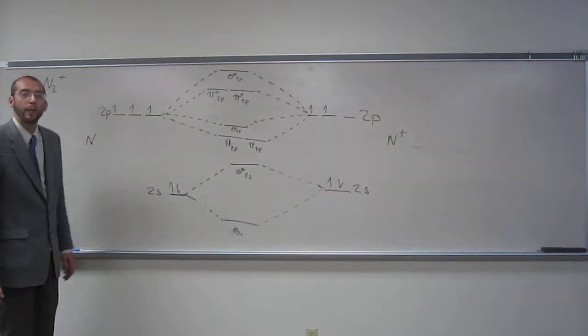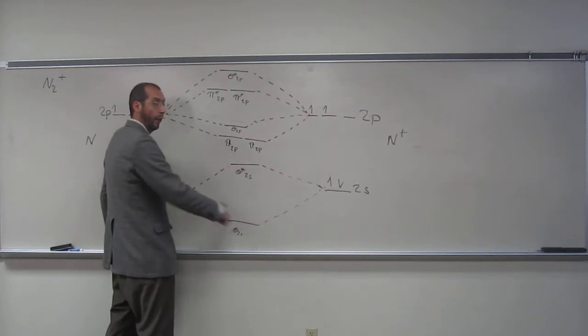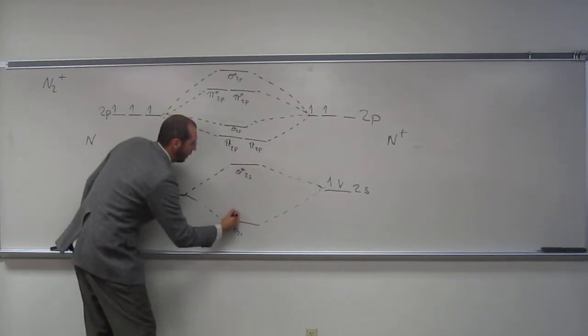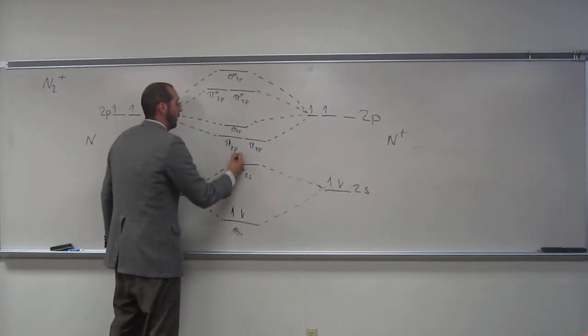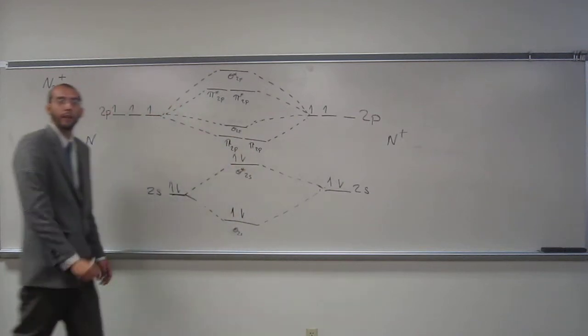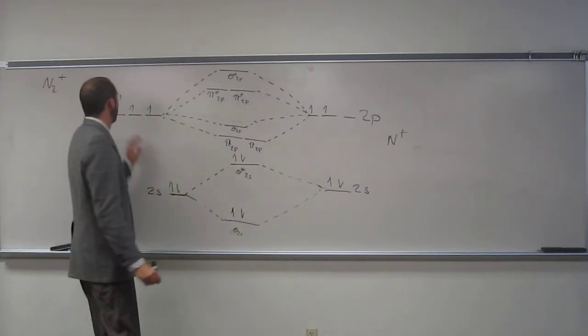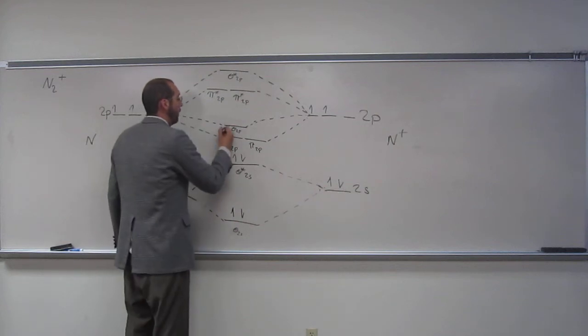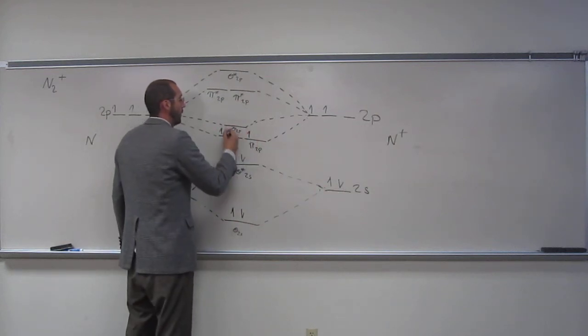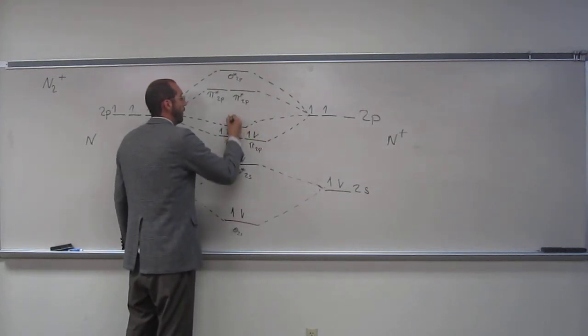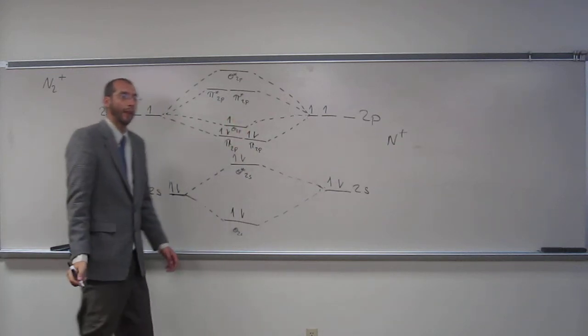So now what do we do? We fill our molecular orbitals. So one, two, three, four, like that. And then here, one, two, three, four, five. So one, two, three, four, five, like that.